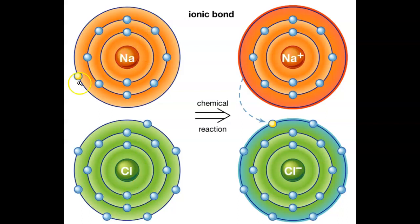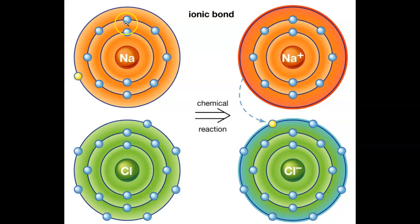Now, what does sodium want to do to get a full outer shell? In order for sodium to get a full outer shell, it has to lose this outer electron. If it loses this outer electron, then this inner shell becomes the outermost shell. The outside thing is gone and you just have these left, so it wants to get rid of that outer electron.